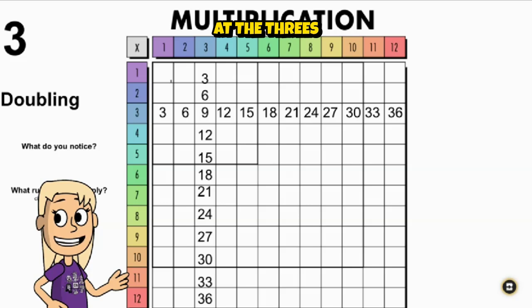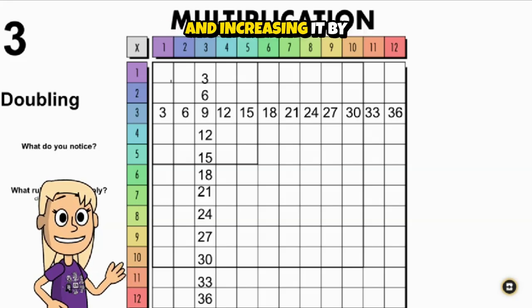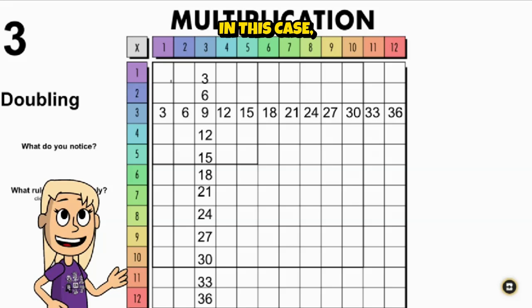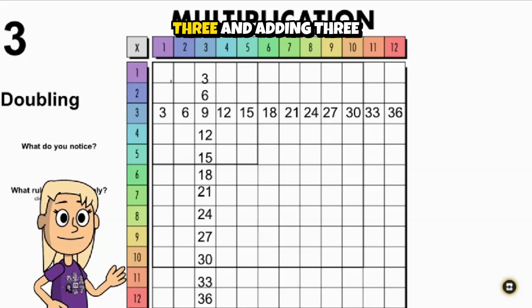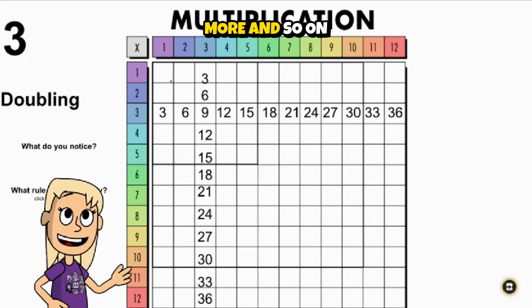So now let's look at the threes. Adding by threes means you're taking the number and increasing it by three. In this case, we are starting with three and adding three, and then adding three more, and so on.